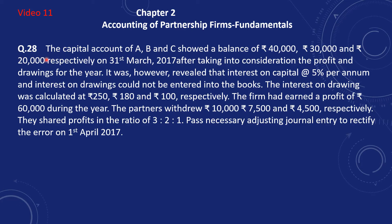Question number 28. The capital account of A, B and C show a balance of Rs. 40,000, Rs. 30,000 and Rs. 20,000 on 31st March 2017, after taking into consideration the profit and drawings for the year. It was however relevant that interest on capital at 5% per annum and interest on drawings could not be entered into the books. The interest on drawings was calculated as Rs. 250, Rs. 180 and Rs. 100. The firm had earned a profit of Rs. 60,000.